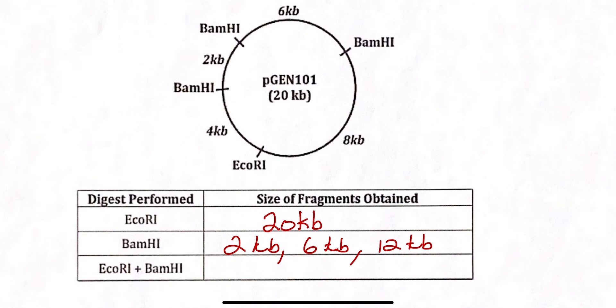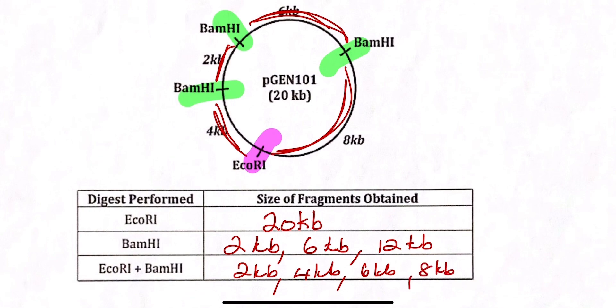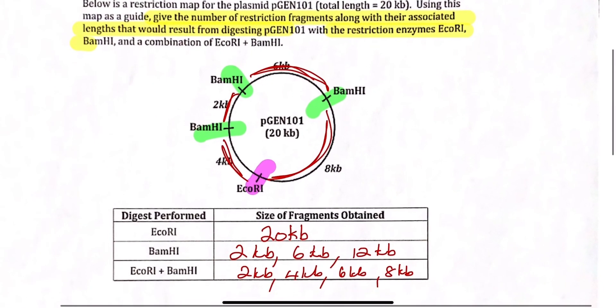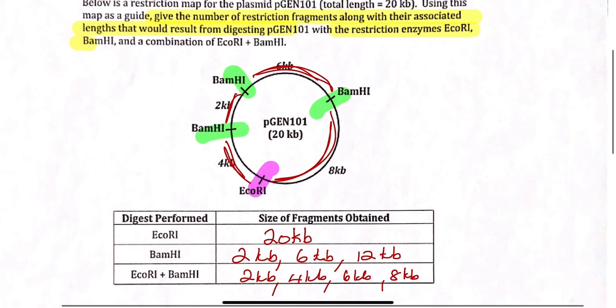And so we now have to consider that the EcoR1 is present and it is going to cut here. And we need to consider that the BamHI is present and it will cut there and there and there. So now we end up with four fragments and those four fragments, the smallest one is the 2 over here, 2 kb. And then we have a 4 on this side and there is a 6 over there. And lastly, we have a longer one, an 8 kb.